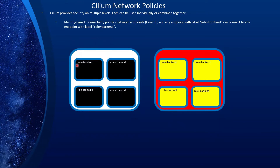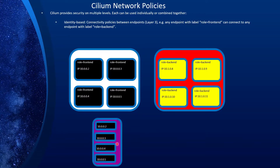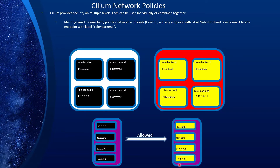So let's see what we mean by that. These four pods have the same label called role equal to frontend — so these are frontend pods. And these are backend pods, identified by role equal to backend. The question is, how do we individually identify these pods? Each pod has a unique IP address, so we could use IP addresses as identifiers. And that's a very good way of thinking, because Kubernetes assigns unique IP addresses to the pods it creates. We can create a rule that says the pods that have these IPs can talk to pods that have these IPs — and that works well in smaller environments. However, pods are ephemeral.